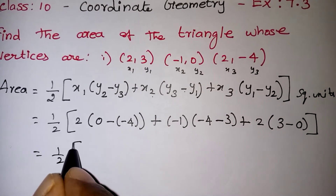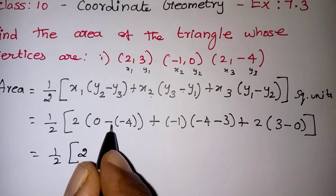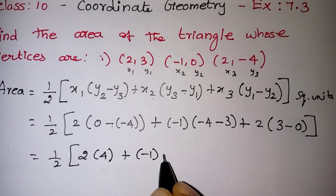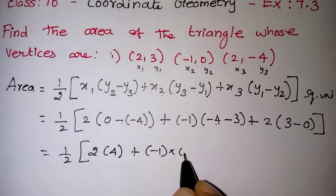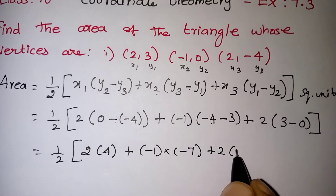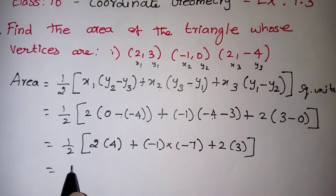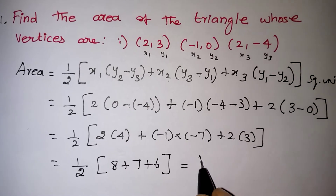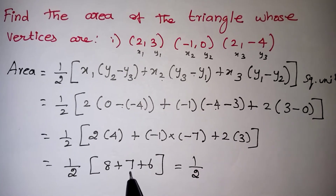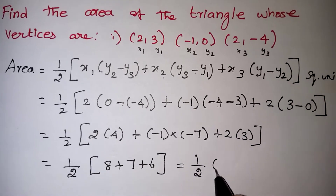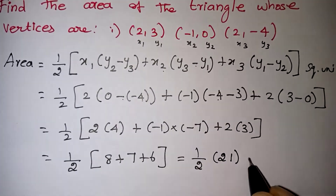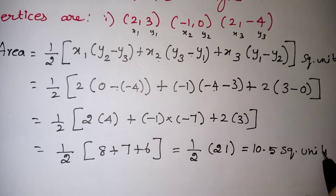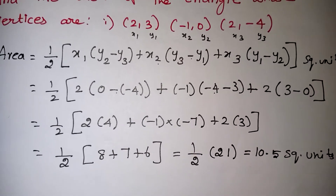Calculating: half into — 2 × 4 = 8 (since minus × minus = plus, 0 + 4 = 4). Then (-1) × (-4 - 3) = (-1) × (-7) = +7. Then 2 × (3 - 0) = 6. So we get half into (8 + 7 + 6) = half into 21. Cancelling gives 10.5 square units. This is the normal procedure using the formula.